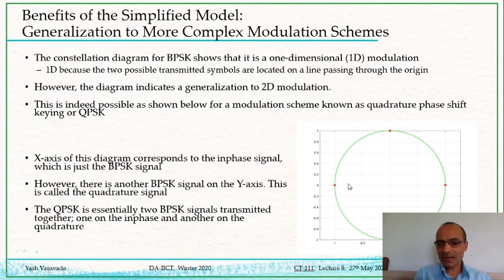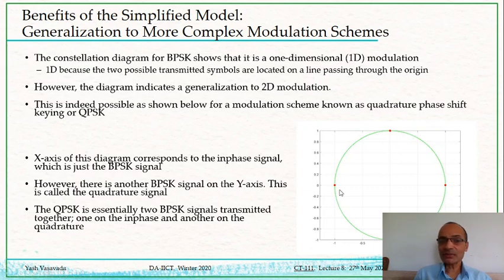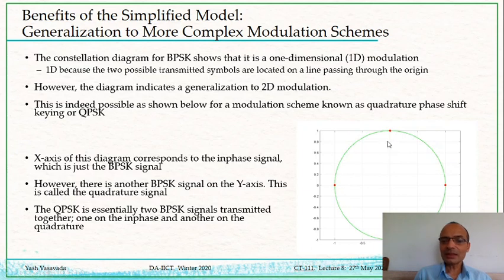Some definitions: the x-axis is called the in-phase signal. If you look at just the x-axis, it is indeed just a BPSK modulation scheme — this is plus one and this is minus one, or in general plus A and minus A. In addition, there is another BPSK signal perpendicular to this, called the quadrature signal. So QPSK is essentially two BPSK signals: one on the in-phase and the other on the quadrature.